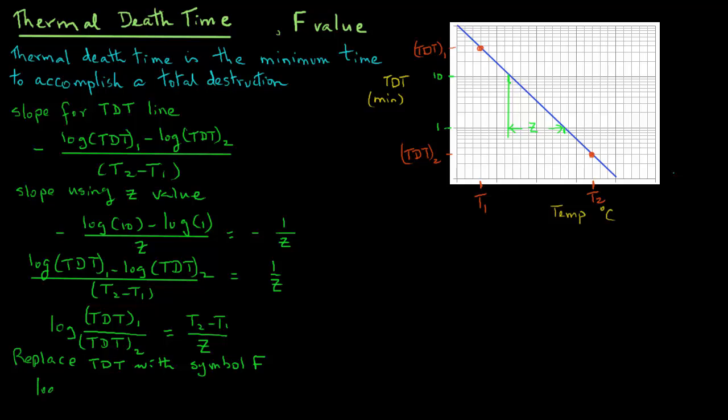So now if we replace this thermal death time TDT with symbol F, we have log(F1 over F2) equals TDT1 divided by Z, or we can say F1 over F2 equals 10 raised to power (TDT2 minus TDT1) divided by Z.